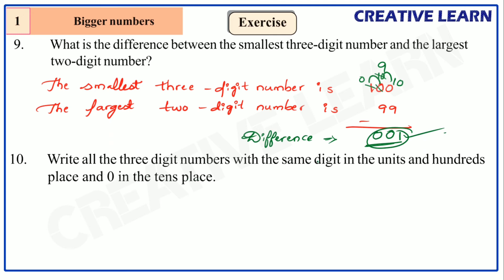Next question: write all the three-digit numbers with the same digit in the units and hundreds place and 0 in the tens place. For example, if we take 1 in the units place, then the hundreds place also has 1, and the tens place is 0, giving us 101.